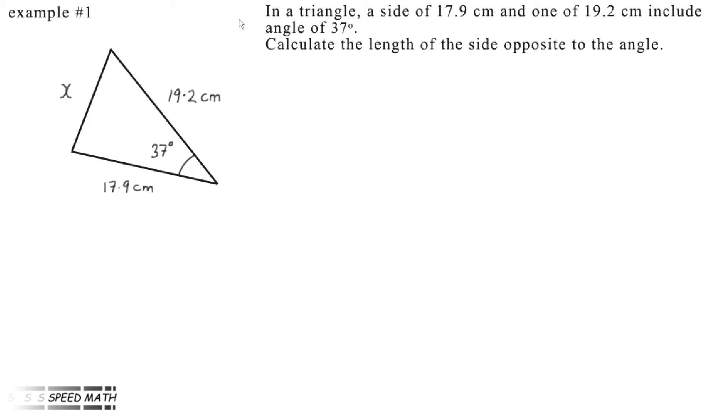Example number one. In a triangle, a side of 17.9 cm and one of 19.2 cm include an angle of 37 degrees. Calculate the length of the side opposite to the angle. Here's a diagram. There's a 19.2 cm side and a 17.9 cm side and the included angle of 37 degrees. We have to find the opposite side, x.